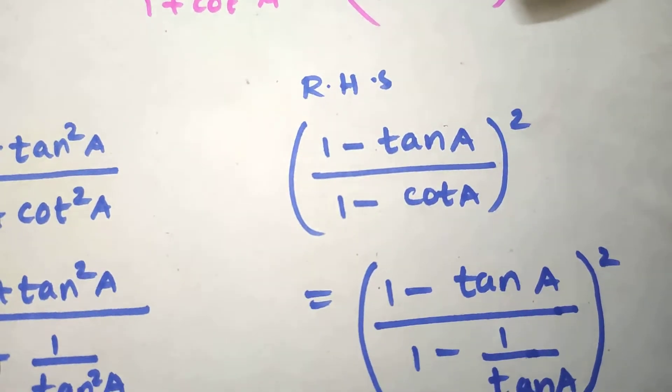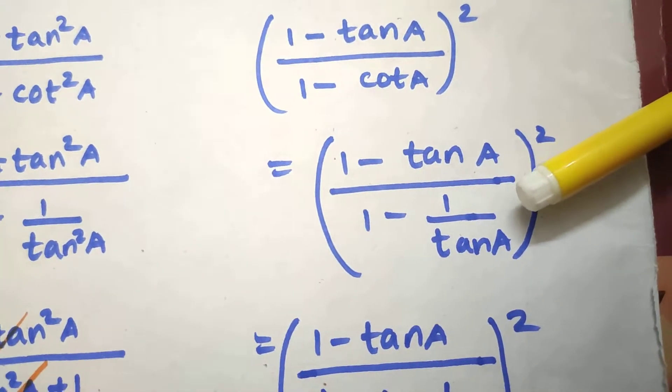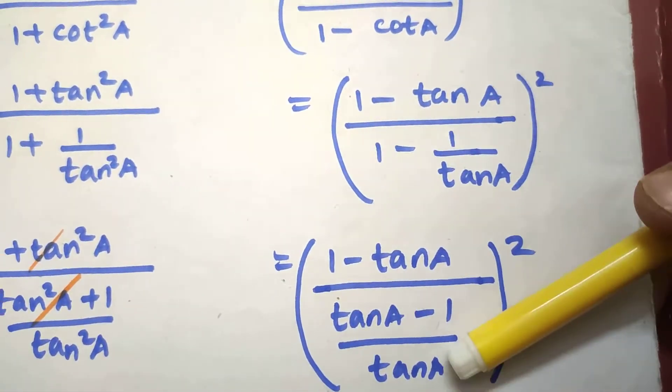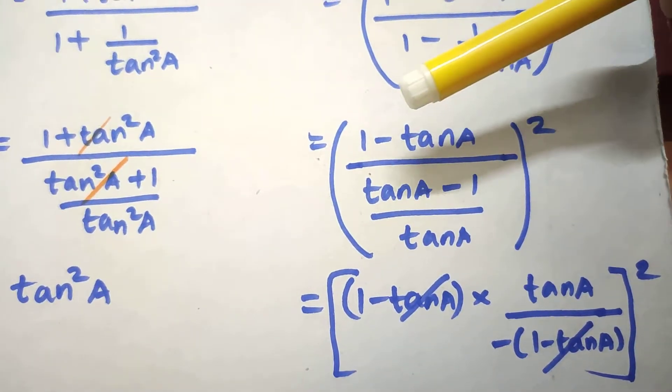Same way, right hand side: (1 - tanA)/(1 - cotA). Again cotA equals 1/tanA, so LCM is tanA, giving (tanA - 1)/tanA.